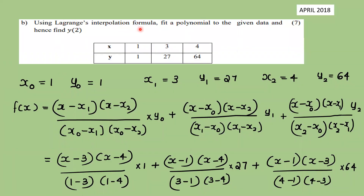Next question: Using Lagrange's interpolation formula, fit a polynomial to the given data and find y(2). The data is: x = {1, 3, 4}, y = {1, 27, 64}. So x0=1, y0=1; x1=3, y1=27; x2=4, y2=64. With three points, the Lagrange formula is: f(x) = [(x-x1)(x-x2)/(x0-x1)(x0-x2)]·y0 + [(x-x0)(x-x2)/(x1-x0)(x1-x2)]·y1 + [(x-x0)(x-x1)/(x2-x0)(x2-x1)]·y2.